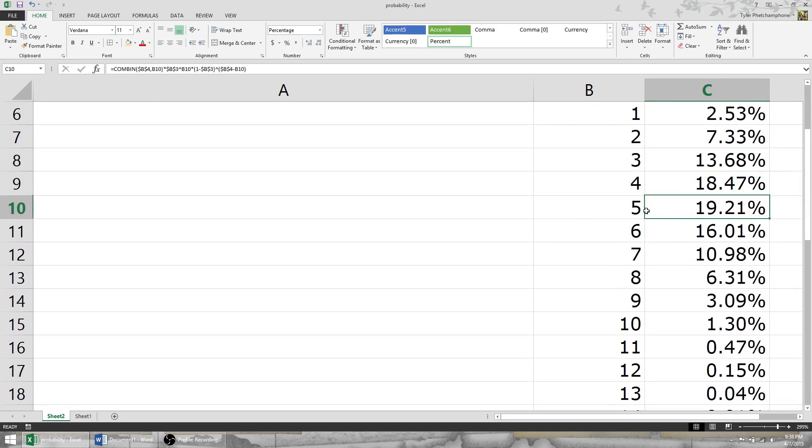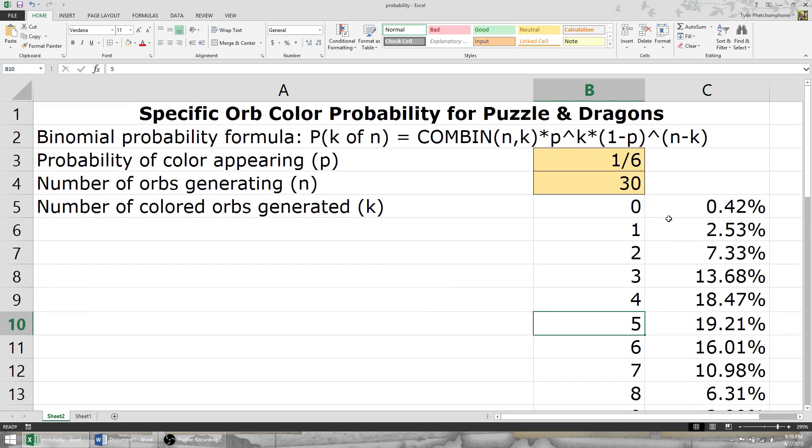Looks like the highest percentage is about 19%, and that's a 19% chance of generating five yellow orbs.